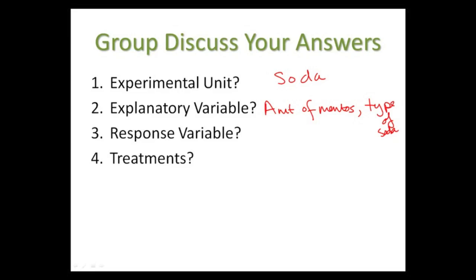We used to call it 'factors' in the old book, rather than explanatory variables — the things that you are varying from experiment to experiment. And then the response variable would be the height of the geyser. That's the thing that we're going to measure.